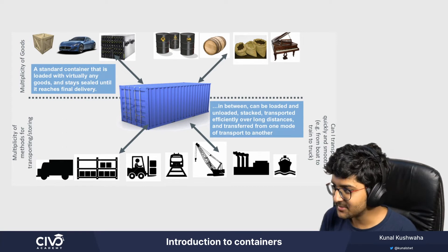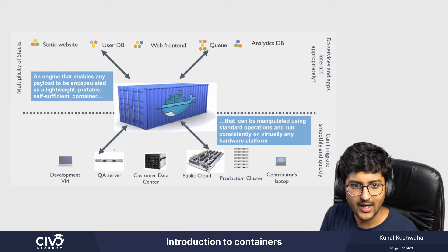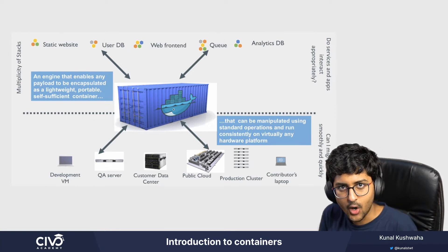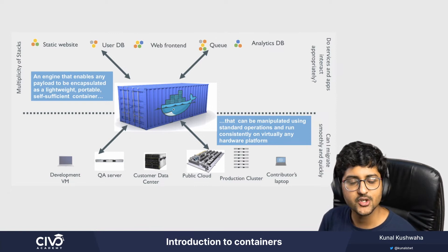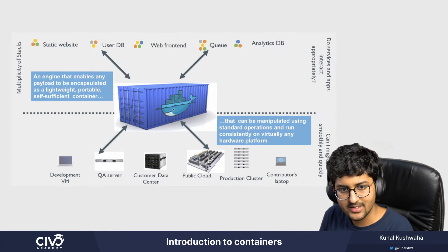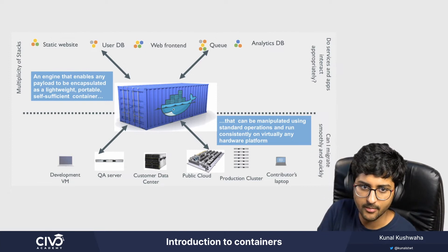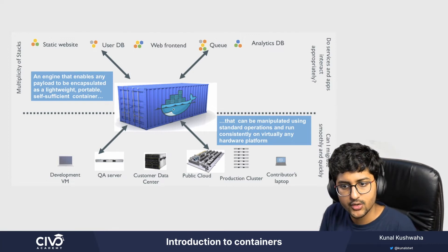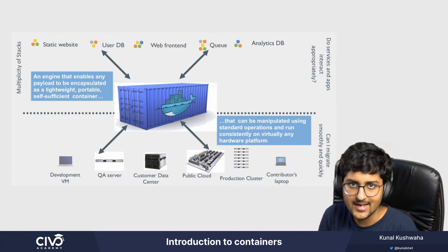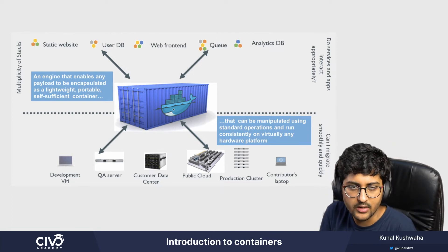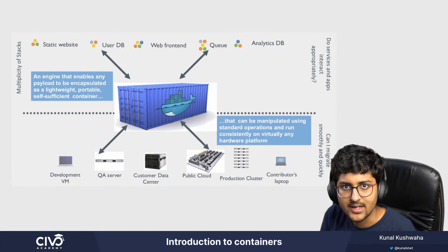Wouldn't it be nice if we could do something like this? If you have your static website, your database, the front-end part, the queue part, the back-end part — all these things you put inside a box and give that box to your friend. This will make sure that the application is going to run on your friend's system. Basically, an engine that enables any payload to be encapsulated — put in a box — as a lightweight, portable, self-sufficient container that can be manipulated using standard operations and run consistently on virtually any hardware platform. This box in which your application is running is known as a container.